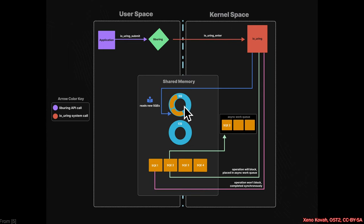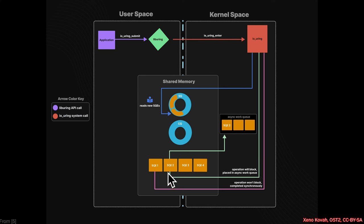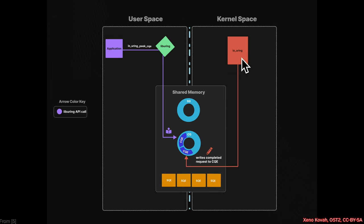Kernel space then reads new submission queue entries. There are two situations: the entry may not block, in which case it can immediately complete — for instance, if user space requested information kernel space has readily available, kernel space puts it in the completion queue and is done. In the more common case where the kernel has to go to a peripheral, it can't complete immediately, so it puts the entry into an asynchronous work queue and handles it as information becomes available. Eventually, kernel space writes completion queue entries into the completion queue, and user space periodically checks if any completion information is available.